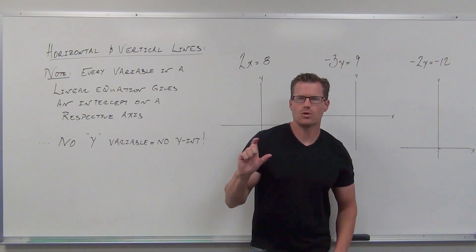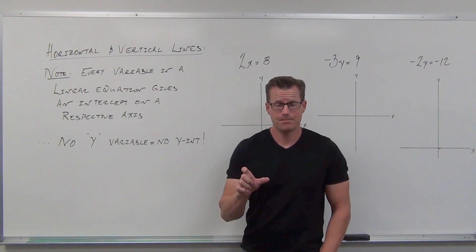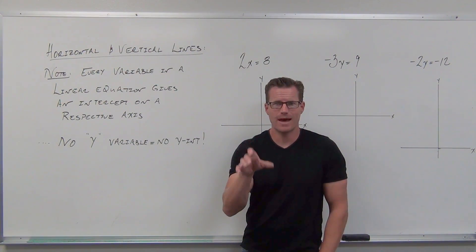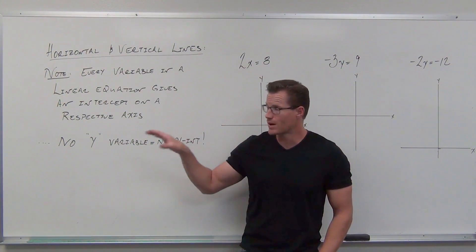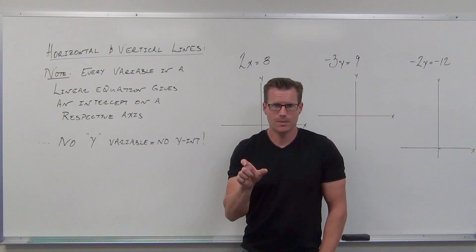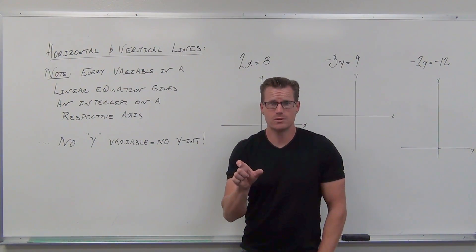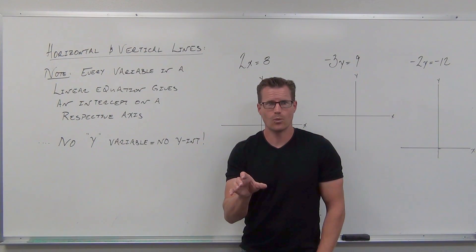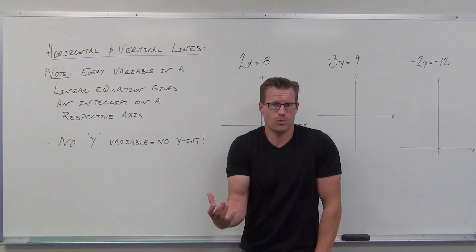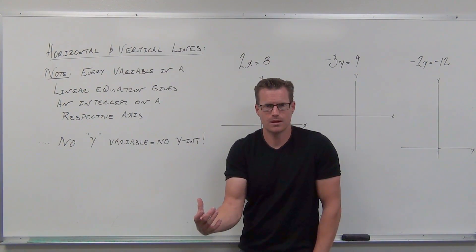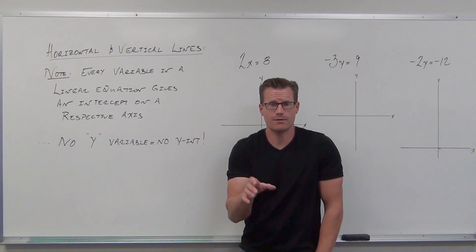Every variable in a linear equation gives you an intercept on its respective axis. That means if you have an x variable, you're going to have an x-intercept. If you have a y variable, you're going to have a y-intercept. What if you don't have a y variable? Then you don't have a y-intercept. What if you don't have an x variable? Then you don't have an x-intercept.